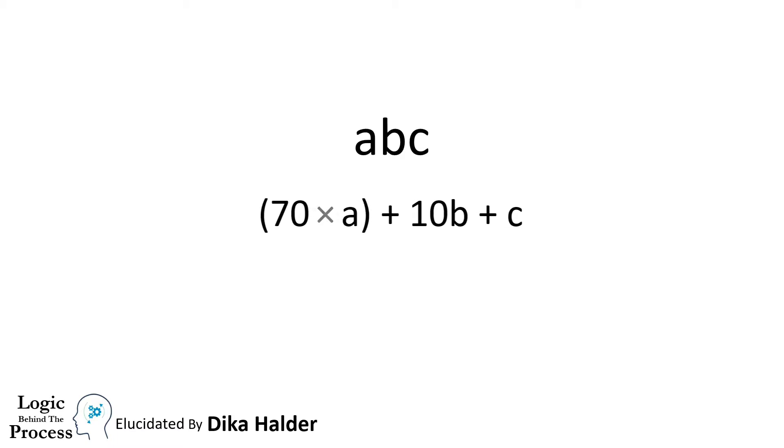Why? See, 70a means 7 multiplied by a. And here a is actually any number—1, 2, 3, 4, 1 million, 10 million, any number.